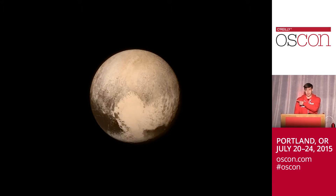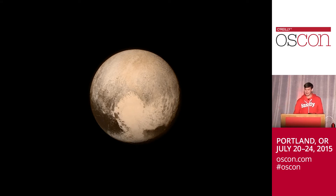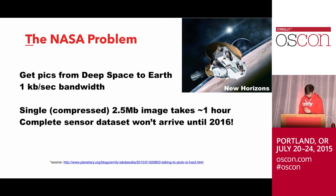Here's an example. Does anyone recognize this picture? Does anyone have any idea how long this image took to send back to Earth from Pluto? The data itself takes about 42 minutes. That's basically what you get in deep space — you get a one kilobit connection. It's super bandwidth limited and a very long distance to travel. NASA has this problem where they have all this data from probes and it takes a really long time to come back to Earth.